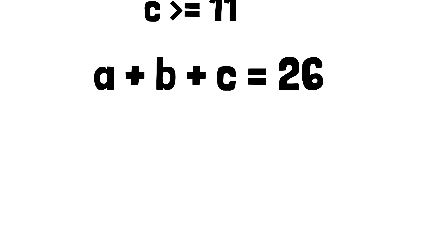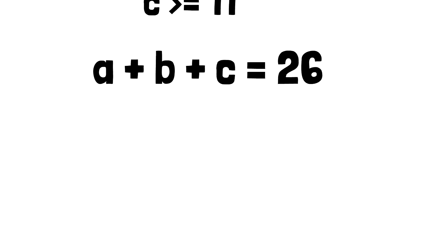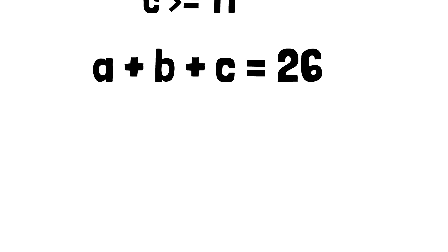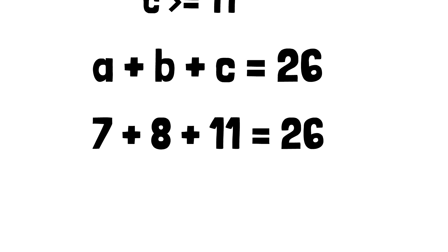Let's put the minimum possible quantity for each of the bills into this equality. So we will have 7 plus 8 plus 11 equals 26. The equality is correct for these values, right?